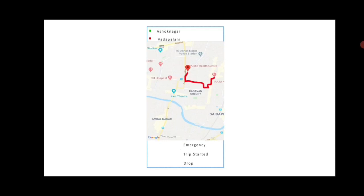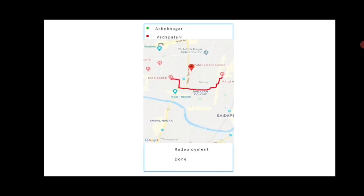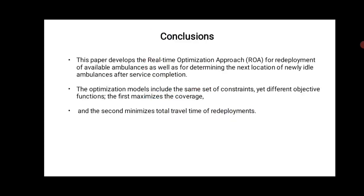The options shown are emergency, trip started, and dropping location. The next map shows the redeployment done, with the ambulance now starting to reach the destination. The conclusion of this project is that this paper develops a real-time optimization approach known as ROA for redeployment of available ambulances, as well as for determining the next location of newly idle ambulances after service completion.